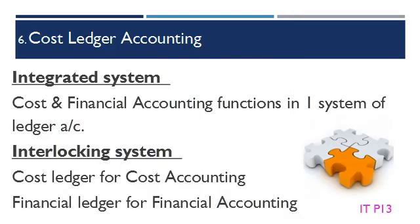An integrated system combines both cost and financial accounting functions into one system of ledger accounts. This system saves money and time, but has the disadvantage of trying to fulfill two purposes with one ledger, even though there are differences in the requirements of financial and management accounting. An interlocking system has a cost ledger for cost accounting and a financial ledger for financial accounting. Both ledgers will have a control account which preserves the integrity of the double entry system. There is easier access to the cost accounting information, but it is more time consuming to prepare two sets of ledger accounts and to reconcile them regularly to ensure they are in agreement.